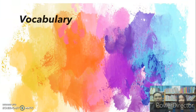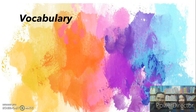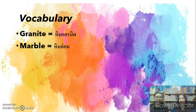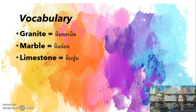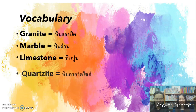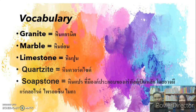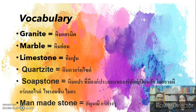Our vocabulary words: the first word is granite. The next one is marble. The third one is limestone. The next one is quartzite. The fifth one is soft stone. And the last one is man-made stone.